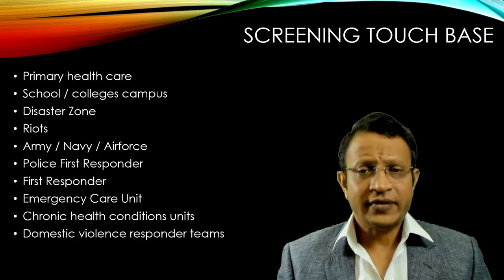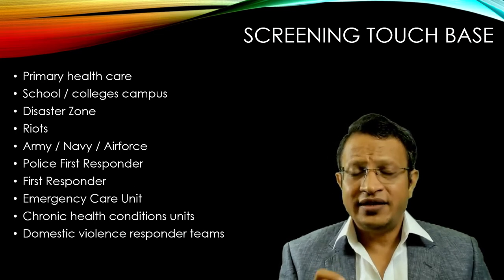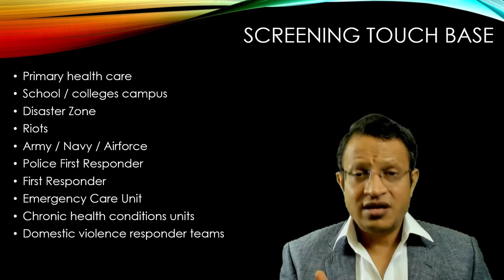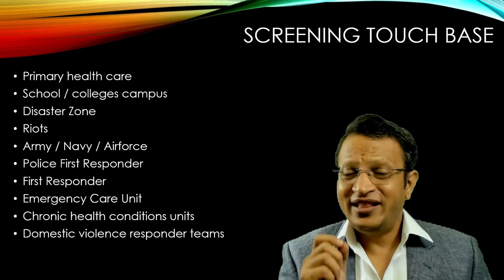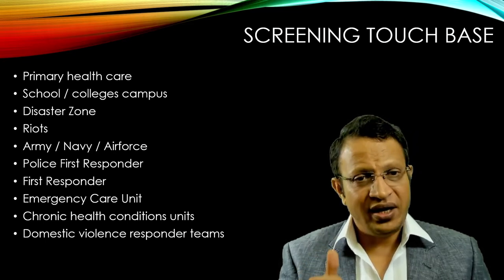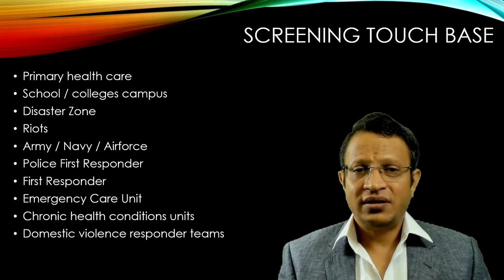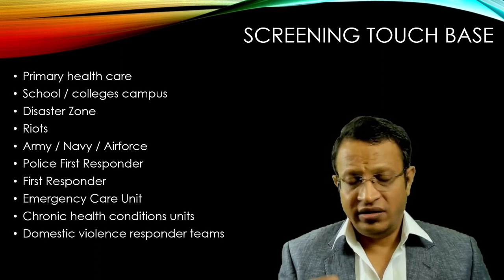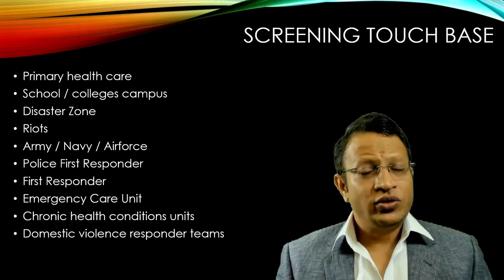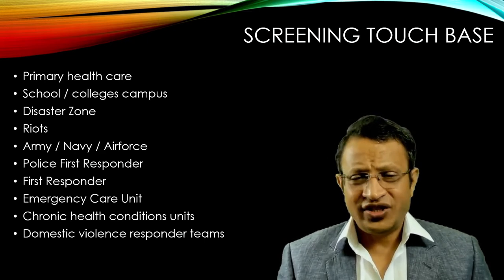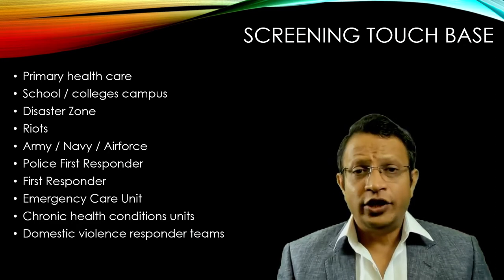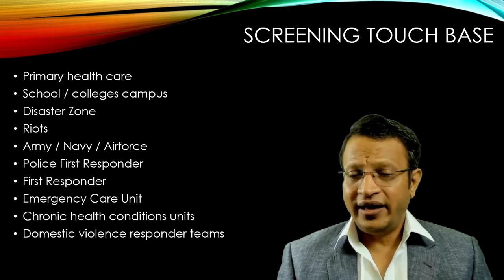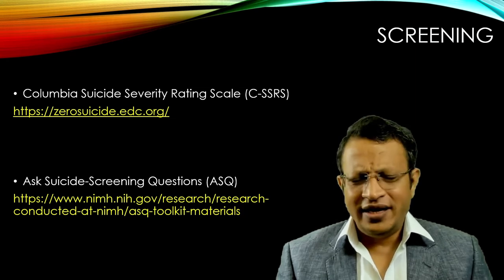Screening can be done at various places — from colleges to hospitals, in emergency settings, in prisons, in the community, in police work, and in various professions where suicidal risk is very high. It may be in primary health care centers, schools and colleges, campuses, disaster-affected areas, riot-affected areas, high-stress jobs like the army, navy, air force, police, first responders, emergency care units, chronic health condition units like kidney dialysis centers, cancer centers, and domestic violence response settings.